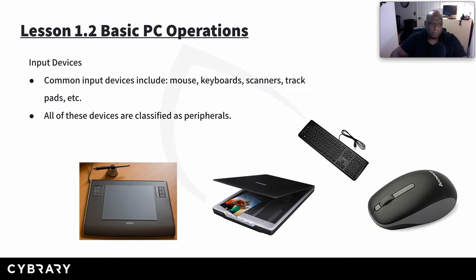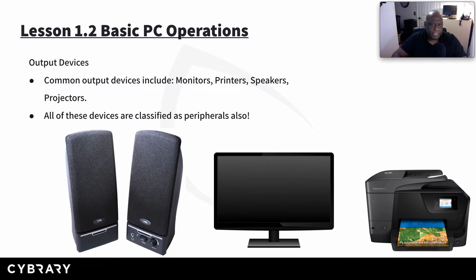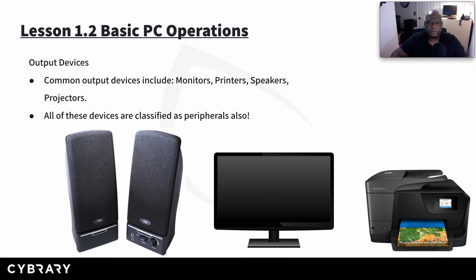Let's move on to output devices. After you put that information into the system, it has to come out some way, unless it's stored — and that's the basic operation of a system unit: processing and storage. But if it's not stored, it's going to come out. It comes out through the monitor — when you connect your monitor to that system unit and you're looking at what's on the screen, it's an output. Printers — when I hit print, that system unit is outputting what I just printed. Speakers — if I'm playing an audio file, the output coming through the speakers is an output device. All of these devices are peripherals, but they are output devices.